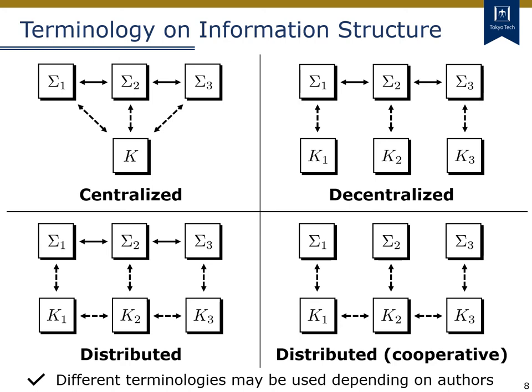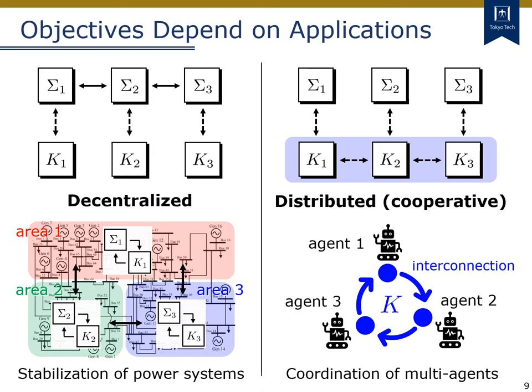The control objectives are generally different for decentralized control and distributed cooperative control. In decentralized control, the subsystems S1, S2, S3 represent some areas in power systems, and the subcontrollers K1, K2, K3 are designed for respective areas for local control. While for distributed cooperative control, the subsystems S1, S2, S3 represent each agent, and the distributed controller represents a communication rule among agents, realizing the desirable coordination of agents.